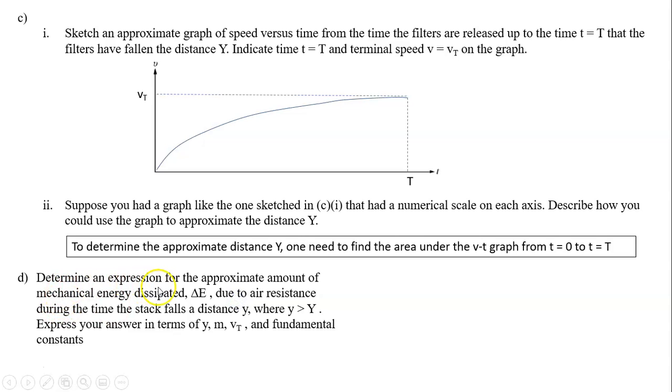Last part, determine an expression for the approximate amount of mechanical energy dissipated, delta E, due to air resistance during the time the stack falls the distance little y, where little y is greater than big Y. Express your answer in terms of little y, m, vt, and the fundamental constants. Let's take a look. Here is our situation. The filter falls. Since little y is bigger than big Y, your speed is terminal velocity.